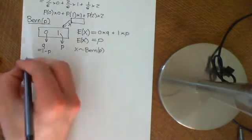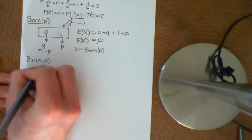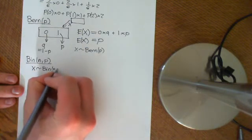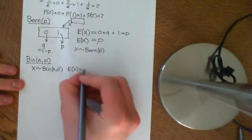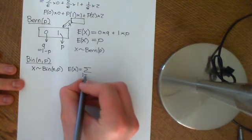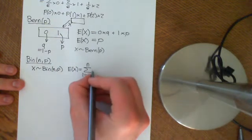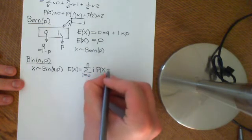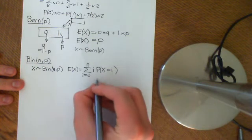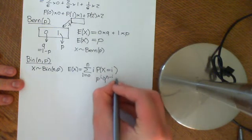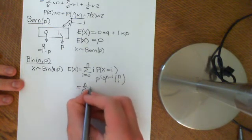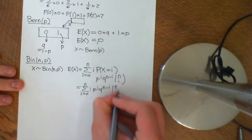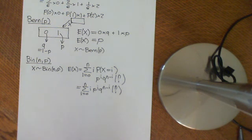Now let's do the binomial NP. Let X be distributed as Binomial(N, P). We want the expected value of X, which equals the sum from i equals zero to N of i times the probability that X equals i. The PMF of the binomial distribution is P to the i times Q to the N minus i times N-choose-i. So the expected value equals the sum from i equals zero to N of i times P to the i times Q to the N minus i times N-choose-i. We'll continue working through this algebra in the next video.